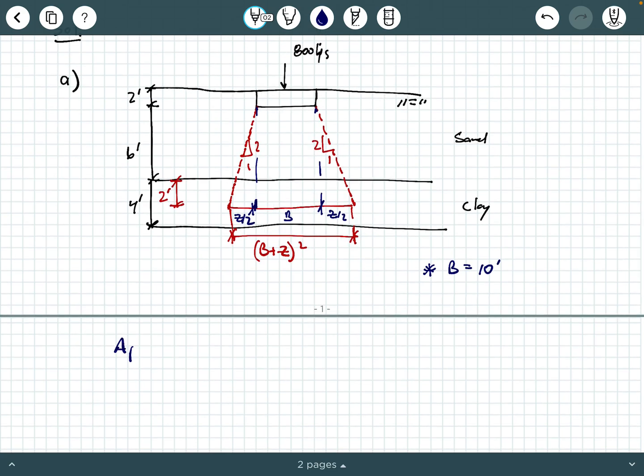So what is our projected area? Our projected area is 10 feet plus what? Well, what is Z? Z is this depth right here. Z is the depth from the base of the foundation to the point that you're interested in. So Z would be 6 plus 2 is 8 feet. So your projected area is 10 feet plus 8 feet, so that's going to be 18 squared. So let's punch that through. So that's 324 square feet.